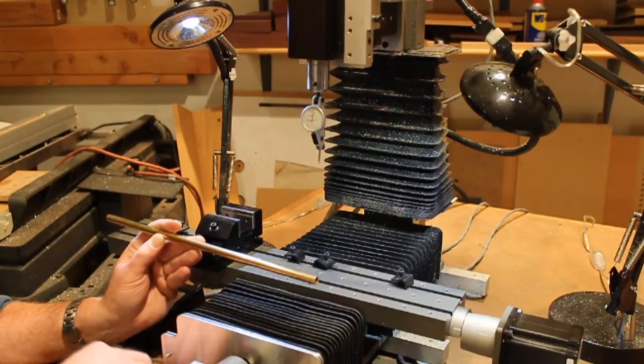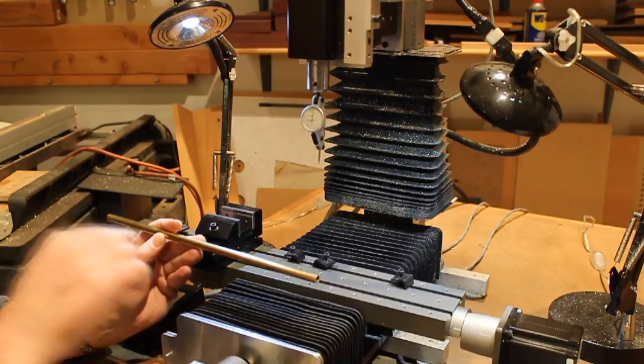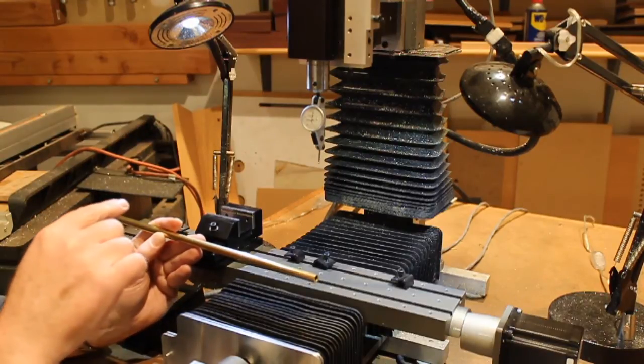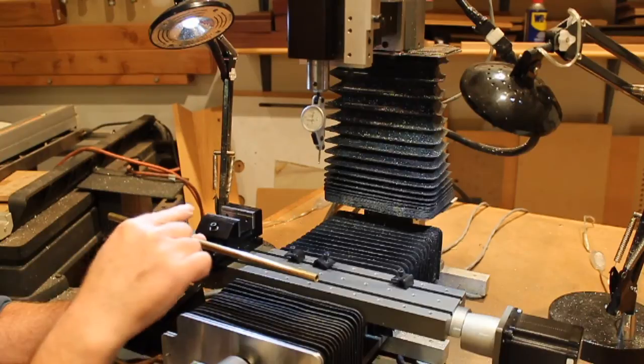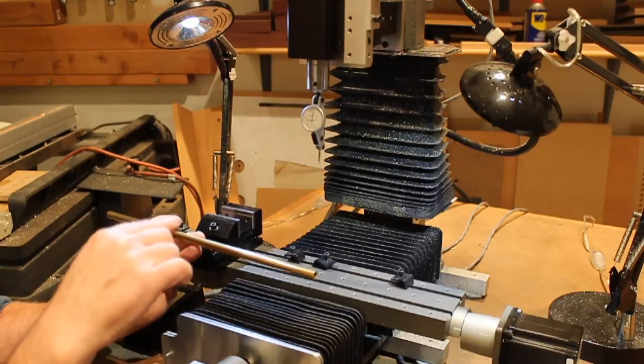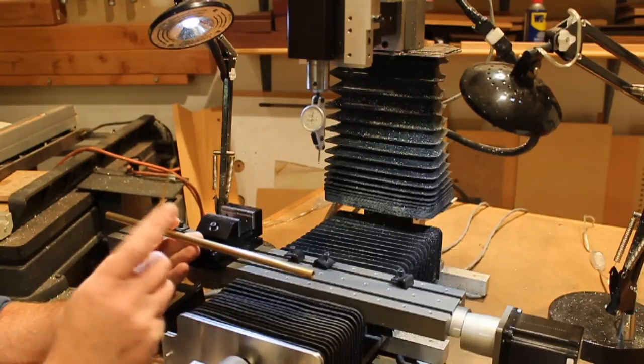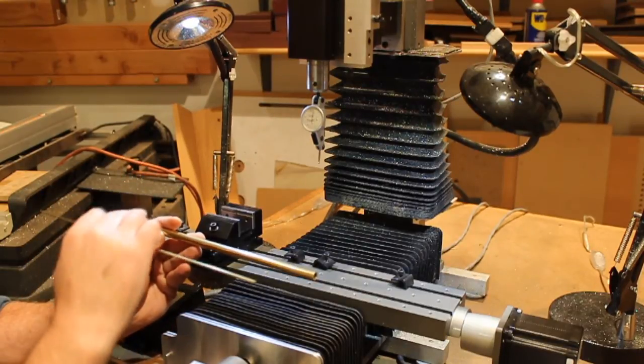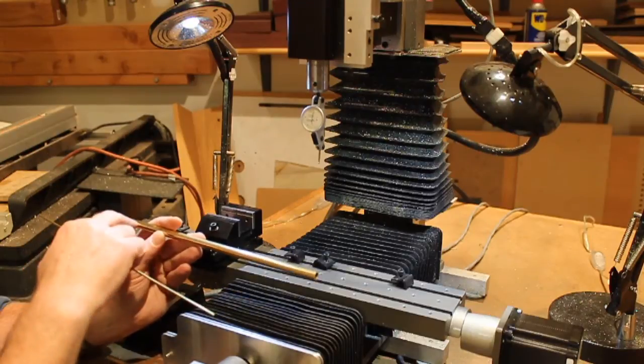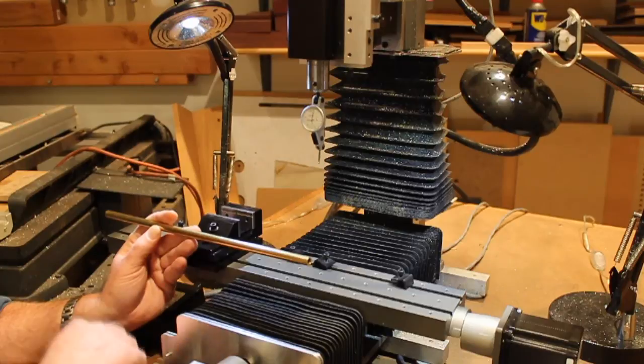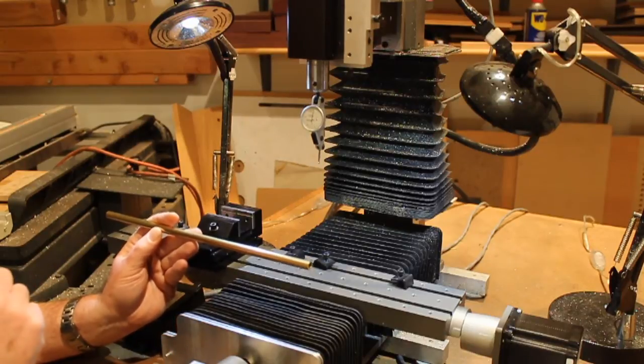The other nice thing is instead of using a broach to make the slot on the gear, I can just use a 3/32nd end mill and just cut half the diameter of the rod. So half the diameter will be in the gear, the other half will be in here. It's the same process, I just find it's a simpler way to do it.